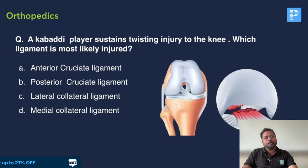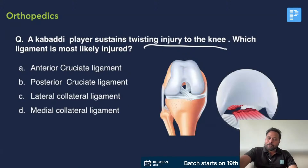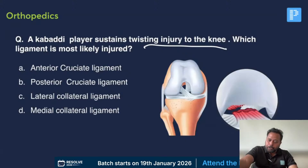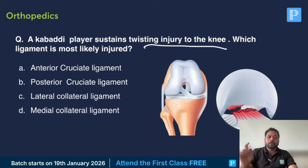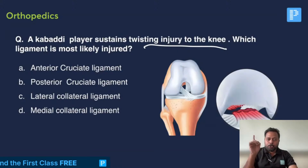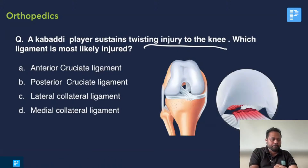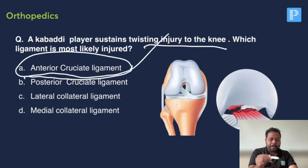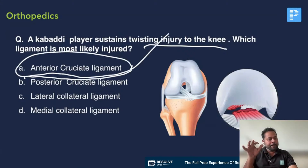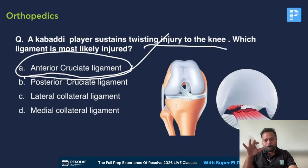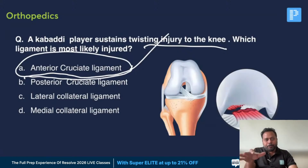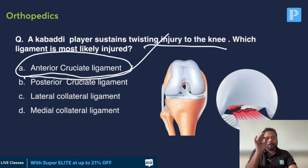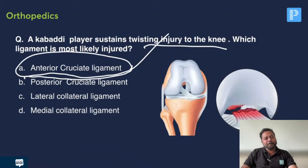A kabaddi player sustains a twisting injury of the knee. Which ligament is most likely injured? When the foot is fixed to the ground and a twisting injury happens at the knee, the most common ligament injured — without doubt — should be the anterior cruciate ligament (ACL). In footballers, kabaddi players, whenever the foot is fixed and twisting occurs, it is an ACL injury.